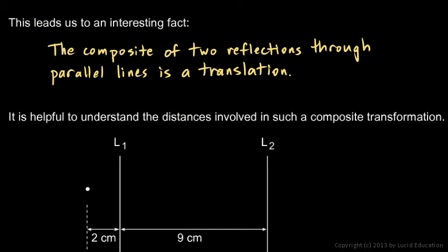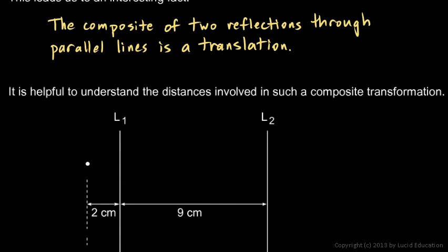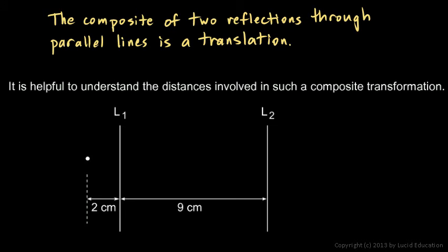And let's look at this next diagram. This shows us how to think about the distances involved in such a composite transformation. So in this case, we're just going to reflect a single point. And here's L1 and L2. And here's our point.